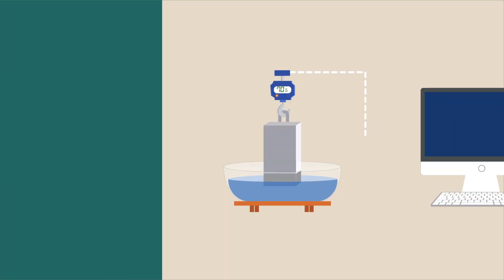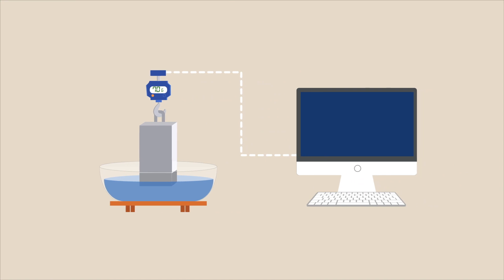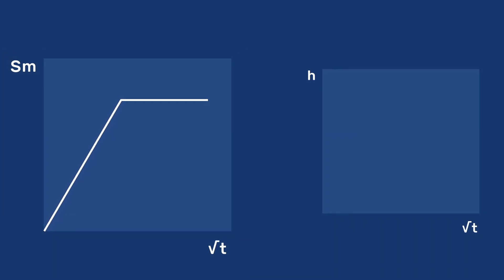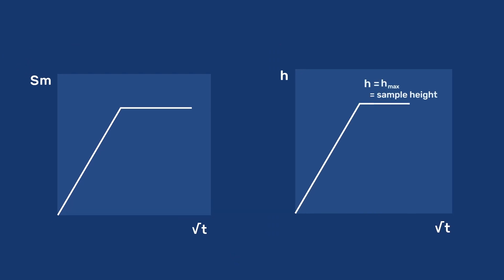Alternatively, the sample is suspended from a scale, and its weight is continuously measured over time. Plotting the change in weight versus the square root of time gives a straight line whose slope is the sorptivity, sm. A plateau appears when the water reaches the top of the sample.